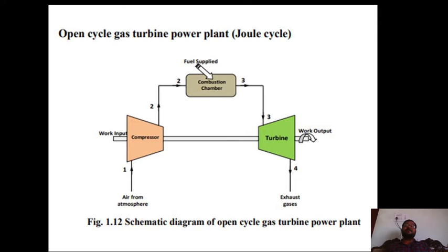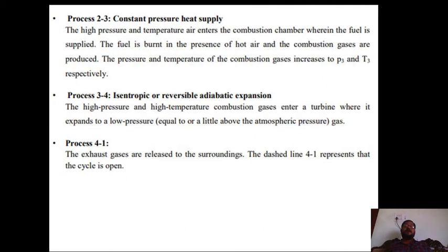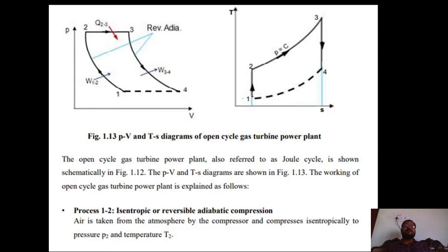Process 3 to 4 is the isentropic or reversible adiabatic expansion process. Here volume increases and pressure decreases, but entropy remains constant — it is a reversible adiabatic expansion. This is opposite to compression: volume increases from 3 to 4, and pressure decreases from 3 to 4. Work is developed during this expansion.